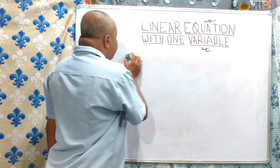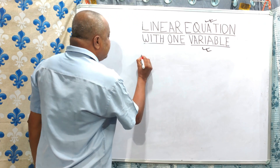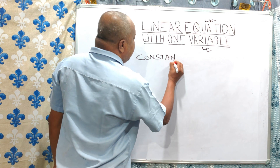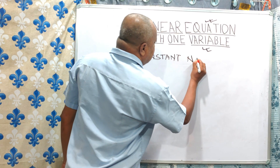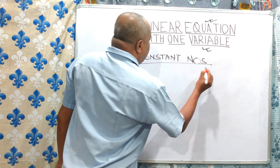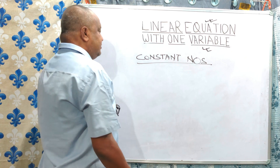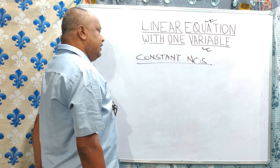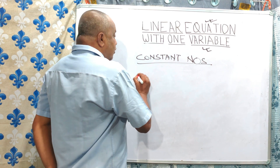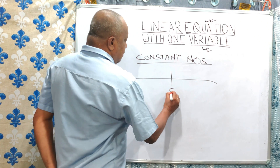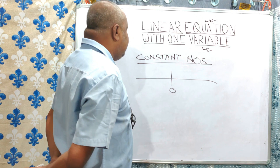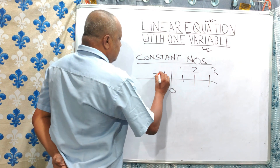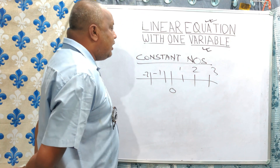First of all, constant numbers. All numbers — whether fraction or whole, whether positive or negative — all numbers are called constant numbers. Examples like 1, 2, 3, etc., are all constant numbers.